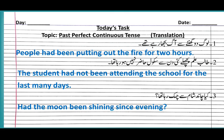For a negative sentence: 'The students had not been attending the school for the last many days.' For an interrogative sentence: 'Had the moon been shining since evening?' We put 'had' at the beginning. We use 'since' with evening because evening, morning, and night are specific time points, so we use 'since' with these timings.